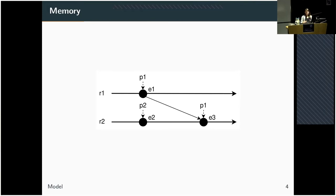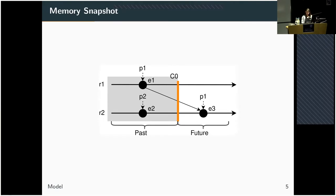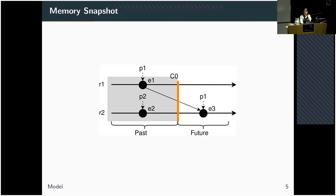How does it look when we take a snapshot in our model? A memory snapshot or memory image is a cut through the space-time diagram. Here we see our cut as this orange line. Everything to the left of the cut from its point of view lies in the past, and everything to the right lies in the future. These space-time diagrams will keep us company for the remainder of this talk.